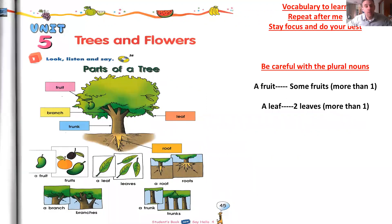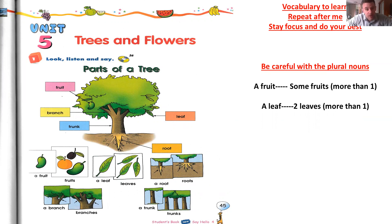Let's talk about nature a bit. Nature is around trees, flowers, and animals in general, and water. So let's take a look at this new vocabulary and repeat after me — parts of a tree: fruit, branch, trunk, leaf, root.